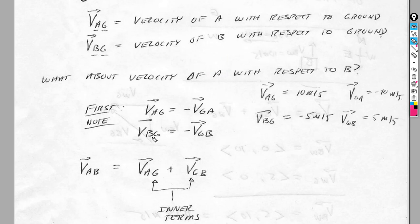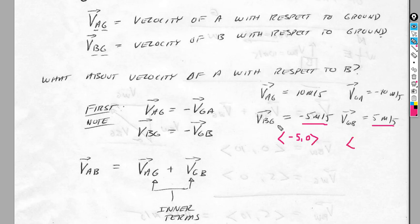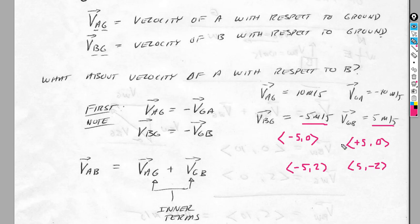The velocity of B with respect to the ground equals the negative of the velocity of the ground with respect to B. In unit vector notation, the velocity of B with respect to G in the X direction only is negative 5 and 0. If I flip those two, I flip every sign — so it becomes plus 5 and 0. If the velocity of B with respect to the ground was negative 5 and 2, then the velocity of the ground with respect to B would be 5, negative 2. In two-dimensional cases it gets rather complicated.